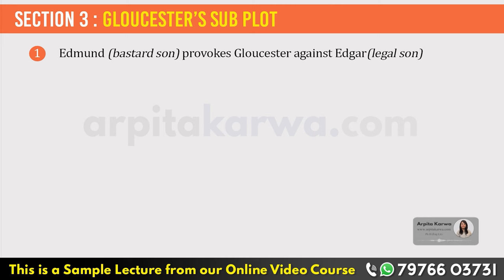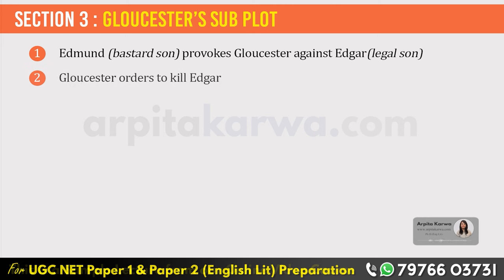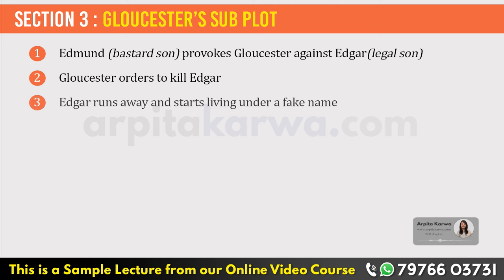Gloucester had a son called Edmund, who was not his legal son because he was born out of wedlock. Edmund tried to provoke Gloucester against his legal son Edgar, saying that Edgar wants to kill you. Gloucester gets convinced and orders to get Edgar killed. Edgar gets scared, runs away to the countryside, and starts living under a false name called Poor Tom.